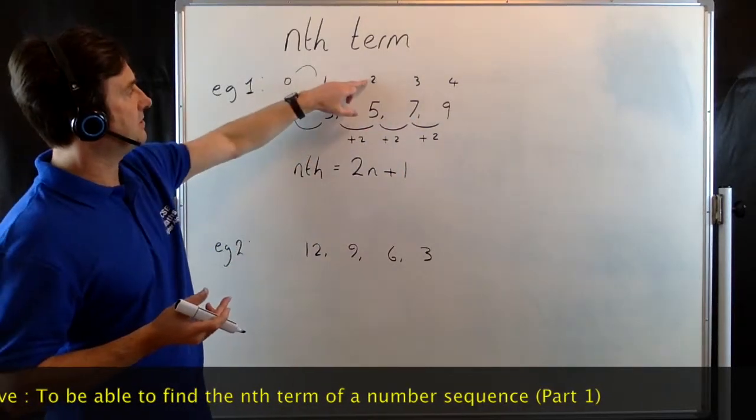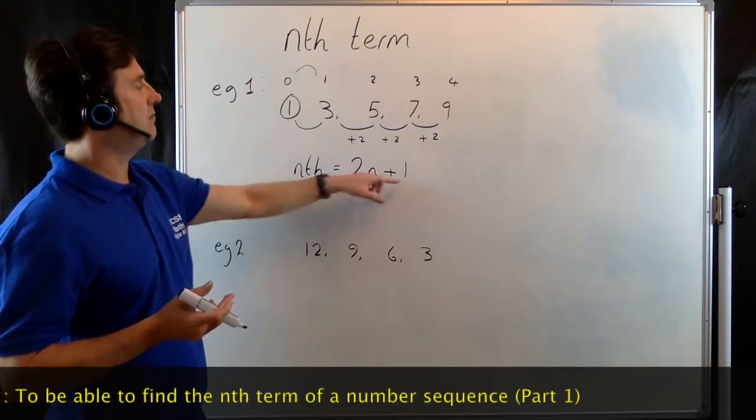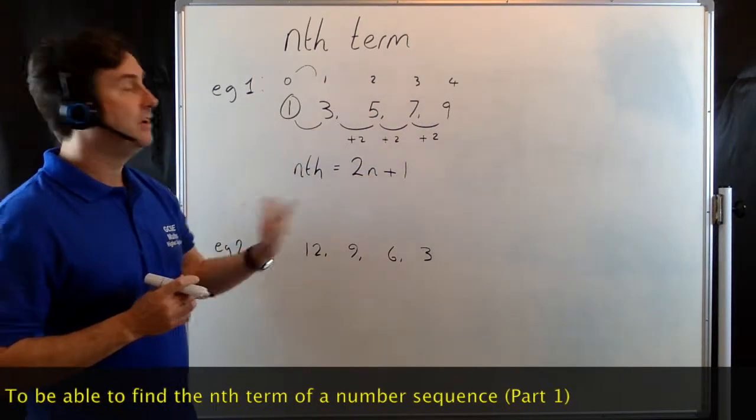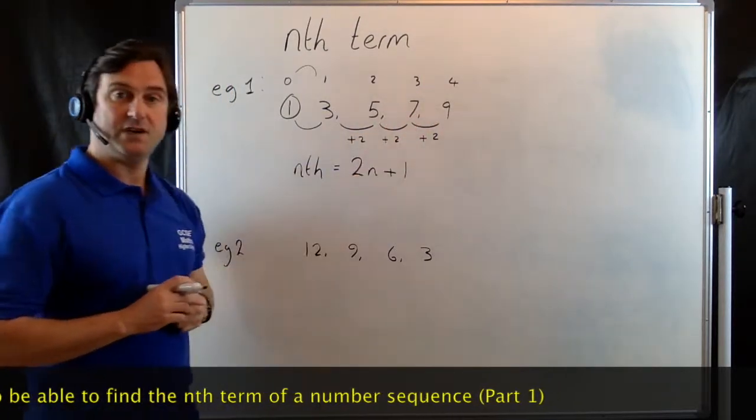Try another one. What about the second term? n now is 2. So 2 times 2 is 4. Plus 1 gives us 5. And the fourth term, 2 times 4 is 8. Plus 1 gives you 9.